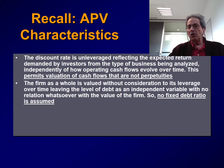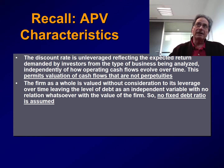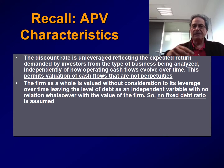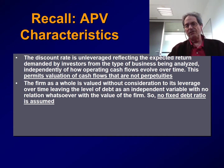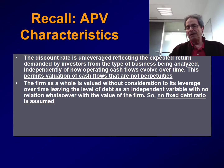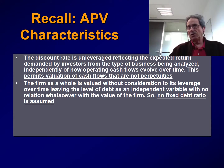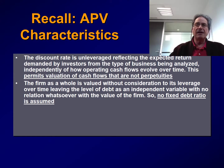Second, the firm as a whole is valued without consideration to the leverage of the firm over time. Remember that when we use WAG, the WAG rate has to be adapted depending on the level of leverage of the firm throughout the years. Under APV, leverage is treated as an independent variable with no relationship whatsoever with the value of the firm. So we just discount the unleveraged free cash flow and then treat the impact of leverage apart.